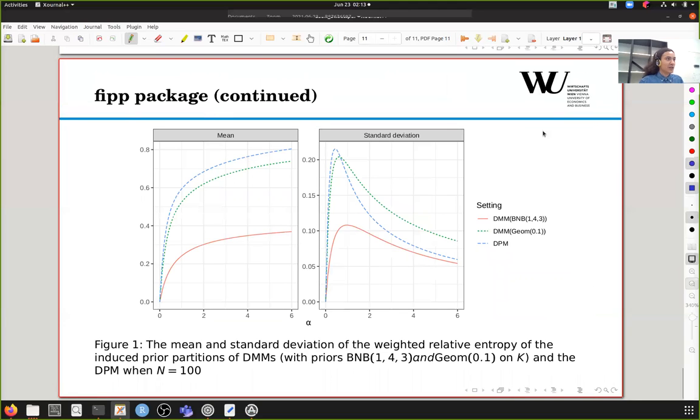We can do more advanced things with the FIP package, like comparing DPM with its discretized version. There's just multinomial distributions with different prior distributions on the number of clusters and partitions. But this is something advanced and I don't have time to introduce. If you're interested, feel free to contact us and we can provide more details. Thank you for listening.